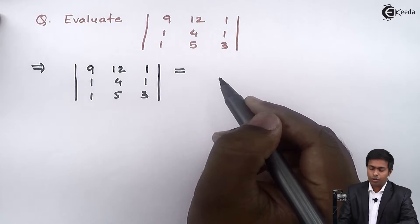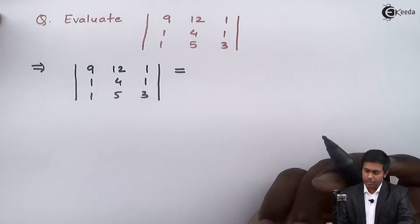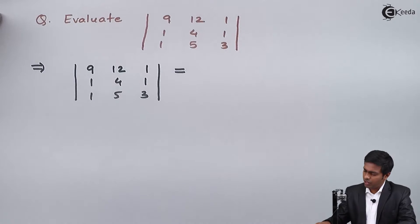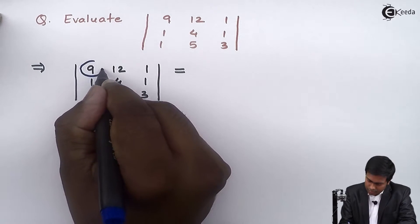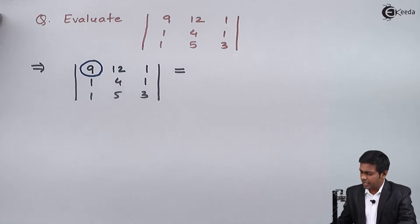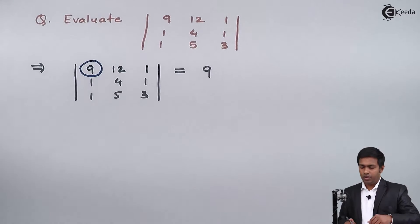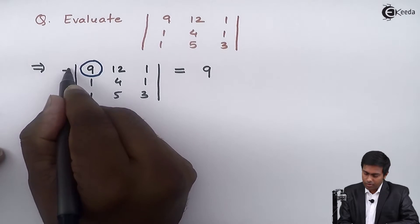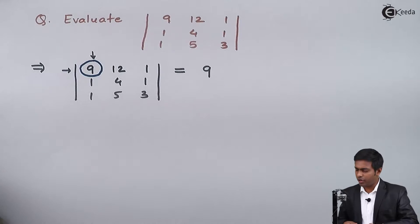To find out the value of a 3 by 3 order determinant, we start with the element which is in the first row and the first column. Here that element is 9. So I'll copy that 9 over here. Since this element lies in the first row and first column, we will hide the first row and first column.